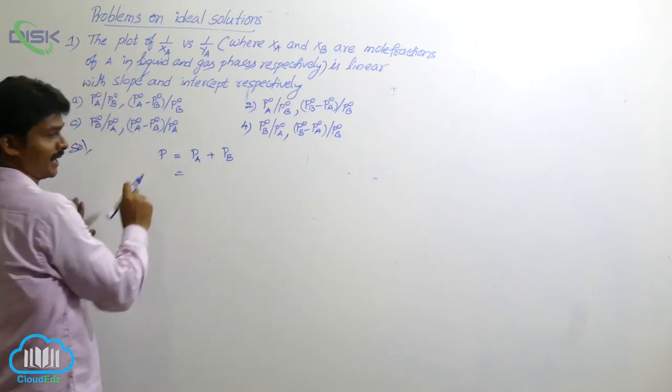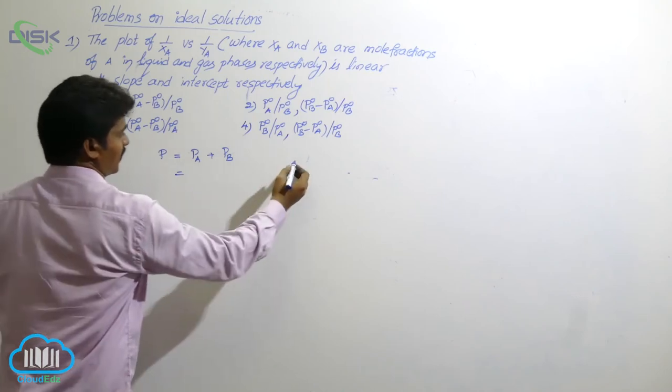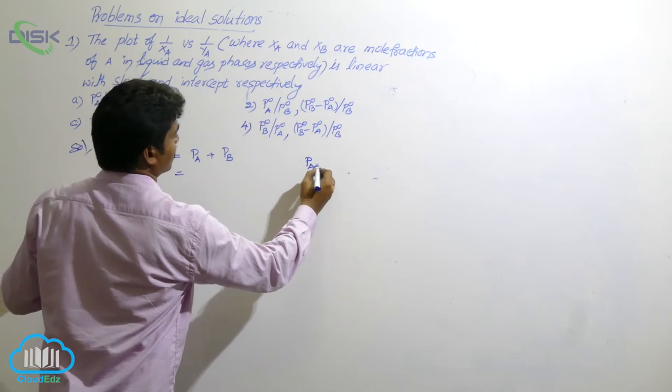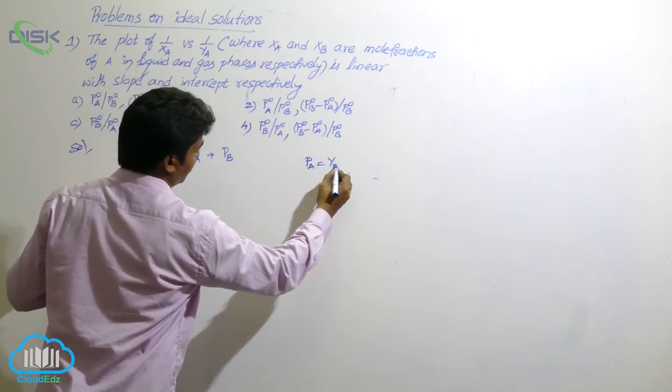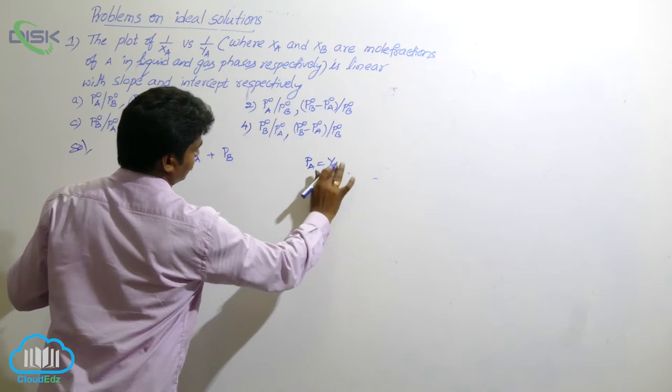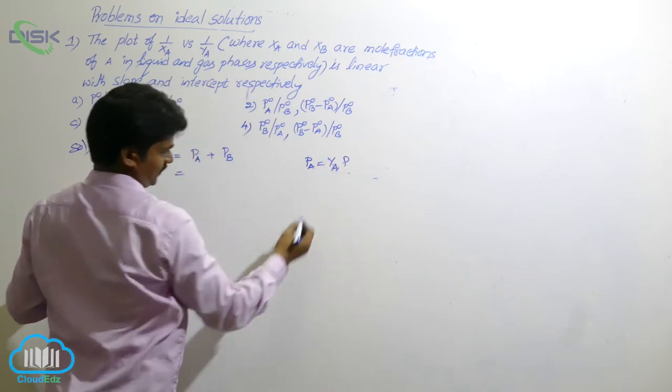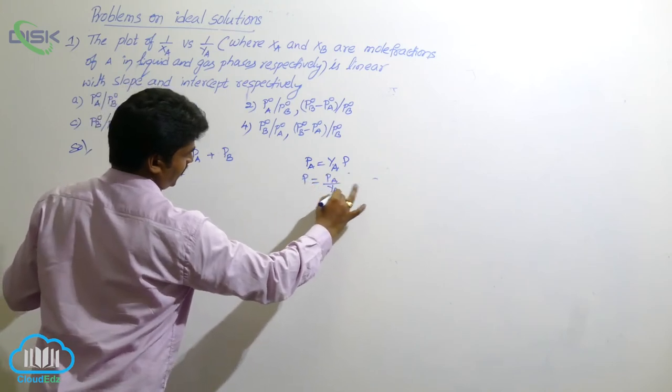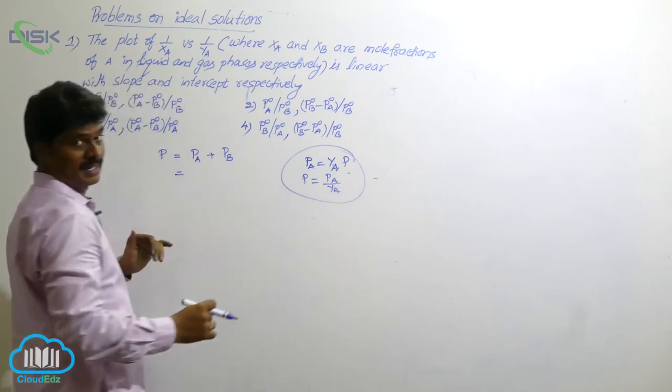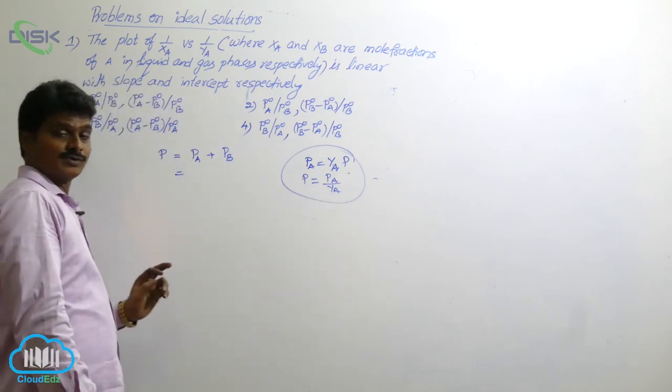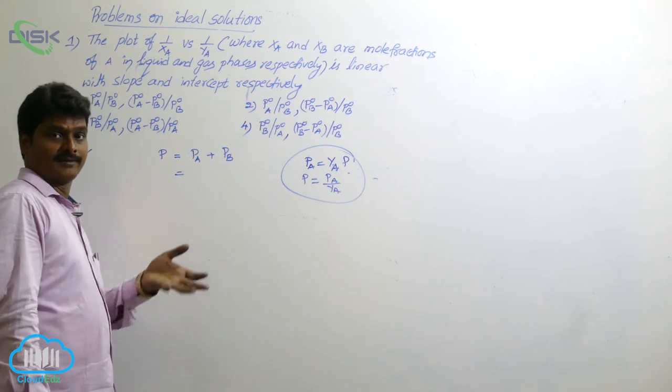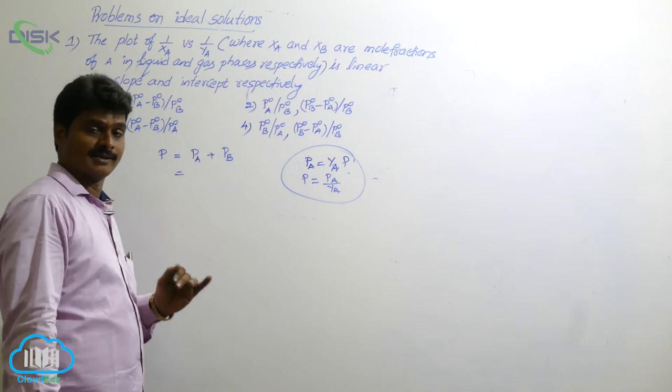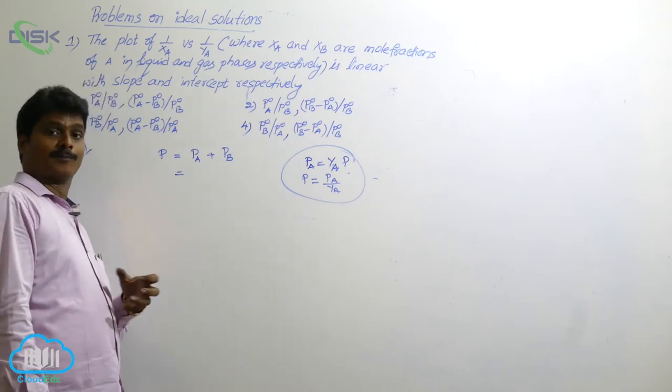So total pressure, how to write? We have from Raoult's law, we have a relation that total pressure equals partial pressure between partial pressure and composition in the liquid phase.